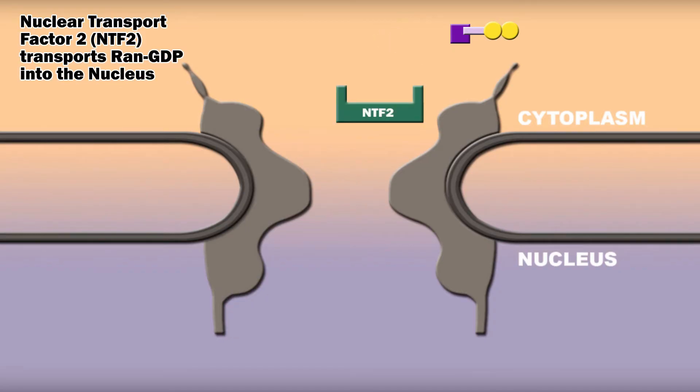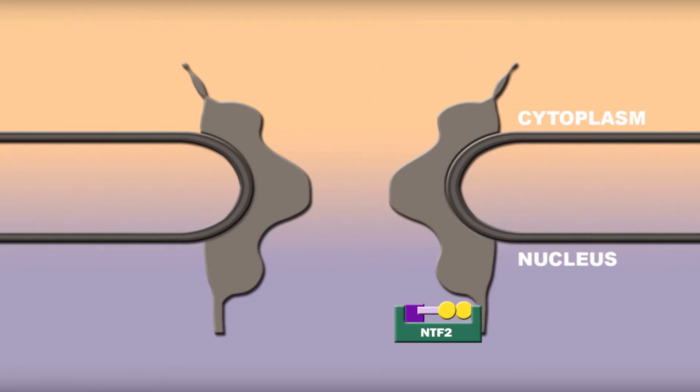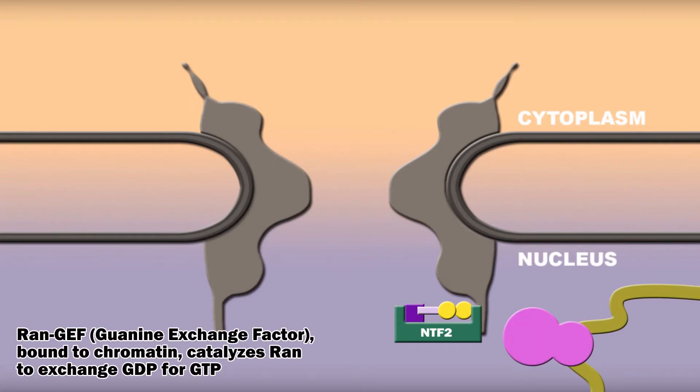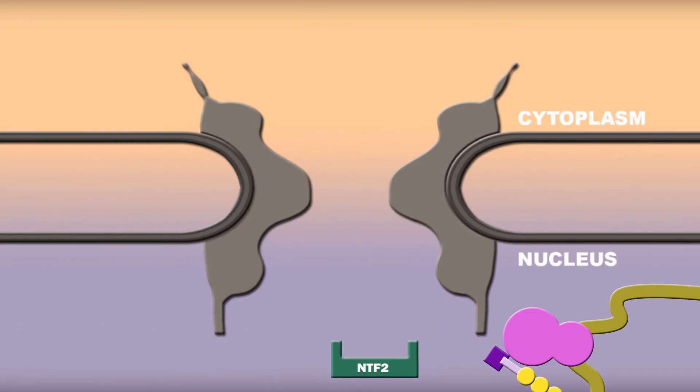Secondly, we have nuclear transport factor 2, or NTF2 for short, which transports RAN-GDP into the nucleus. Inside the nucleus, we have RAN-GEF, guanine exchange factor. RAN-GEF is bound to chromatin and catalyzes RAN to exchange GDP for GTP. Upon completion, NTF2 returns to the cytoplasm.